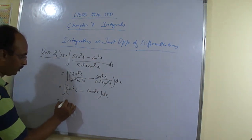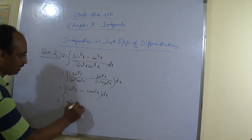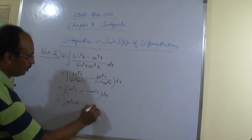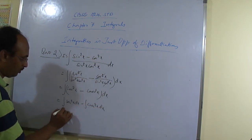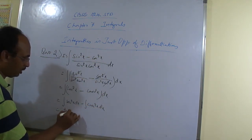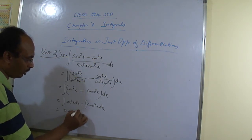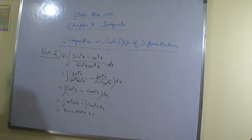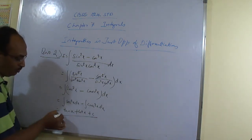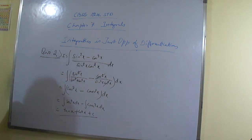We already know: the integral of sec²x dx minus the integral of cos²x dx. This gives us tan x, and this gives us cot x plus C. So this has become the formula.